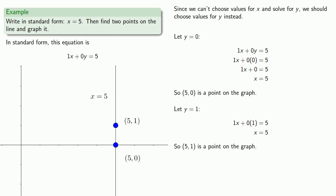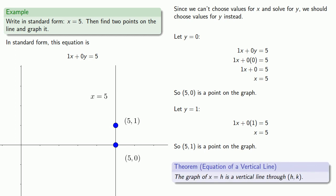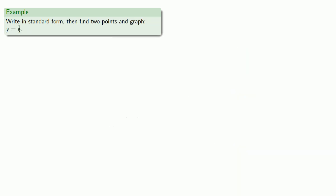It's worth emphasizing we can always go through this procedure of finding points on the line. But it may be worth noting that this equation, x equals 5, gave us a vertical line. And this is, in fact, an example of a much more general result. Namely, the graph of x equals h is a vertical line through the point (h, k).